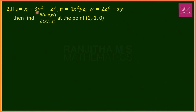Second problem: if u = x + 3y² − z³, v = 4x²yz, w = 2z² − xy, find del(u,v,w)/del(x,y,z) at the point (1, −1, 0). Here 1, −1, 0 are the values of x, y, and z respectively at which we evaluate the Jacobian.